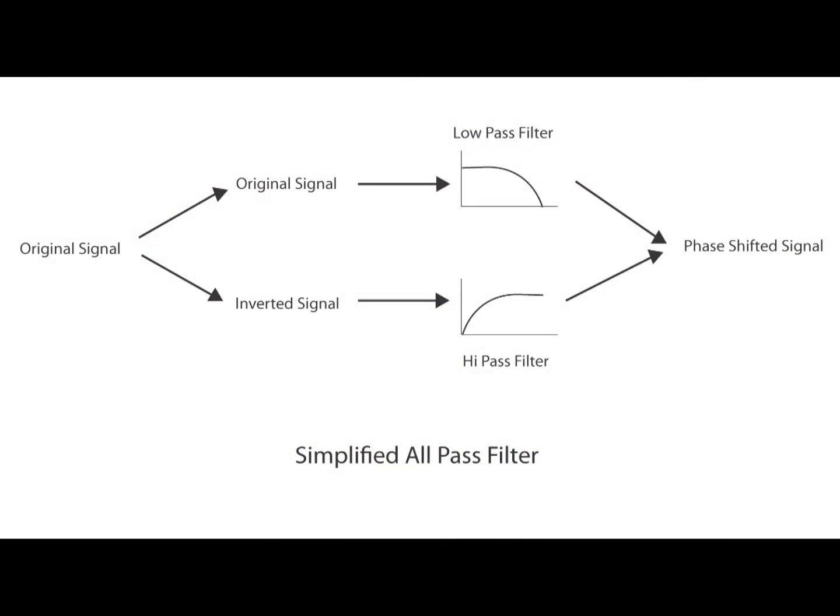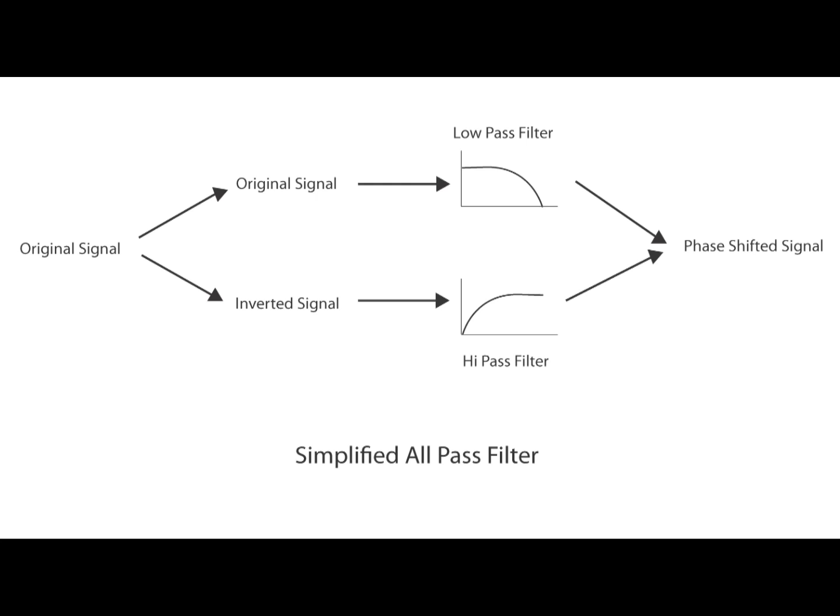This is achieved using an all-pass filter. An all-pass filter will allow every frequency to be passed through at an equal volume, so the frequency response remains unchanged, but it can be used to change the phase response. Here's how. An all-pass filter takes the input signal and splits it into two identical copies. It then inverts the phase of one of the signals, so at this point the two signals are basically mirror images of each other. It then runs one signal through a low-pass filter and the other through a high-pass filter, then combines them together. The result is a flat frequency response, but the phase response has changed.